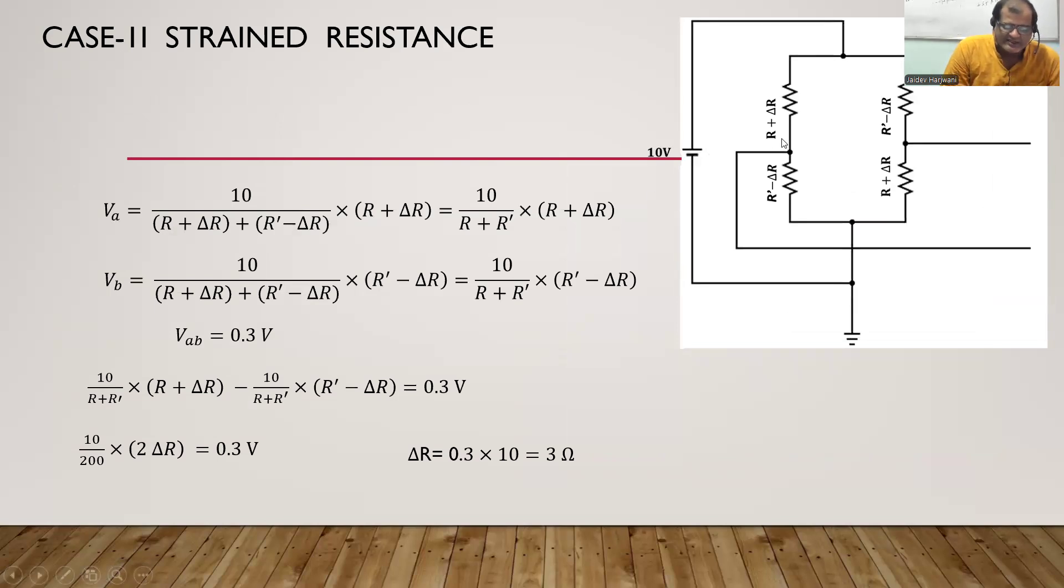Now you apply a strain, so R will become R plus delta R and R' will become R minus delta R. We will calculate the voltage Va and Vb. In this case Va is across R plus delta R. Total resistance will be R plus delta R plus R minus delta R. Delta will cancel so total resistance will be 2R. We are applying the voltage division here so the voltage across R plus delta R will be Va.